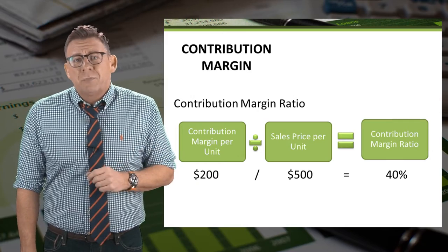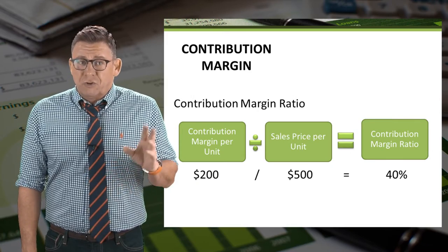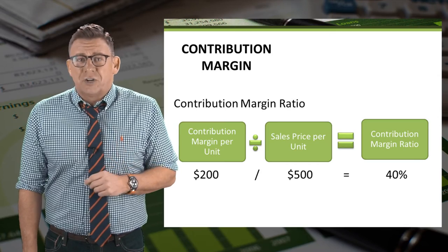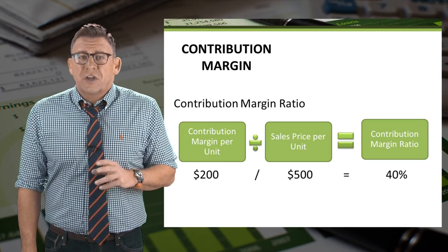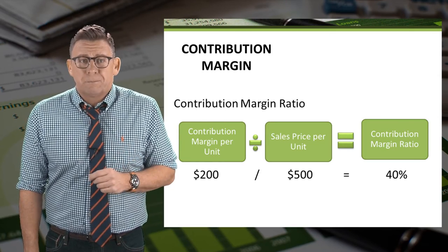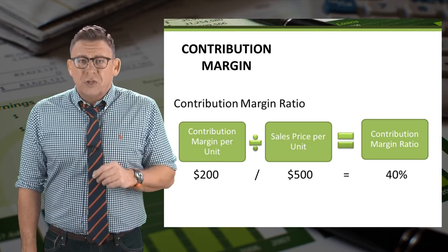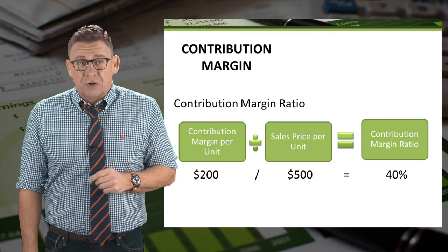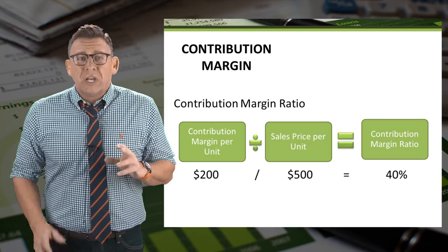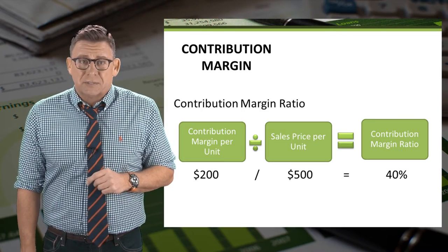In this example, the unit contribution margin is $200 and the unit price is $500, so the contribution margin ratio is 40%. We will use both the unit contribution margin and the contribution margin ratio when we learn about cost-volume profit analysis.